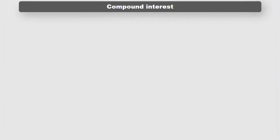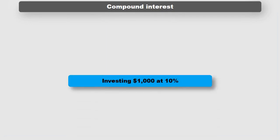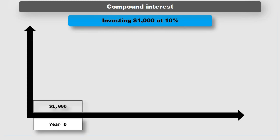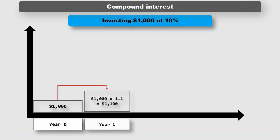Let's consider the mechanics of compound interest. This can be considered as interest accumulating on a deposit in the bank. Suppose we put a thousand dollars on deposit today into an account that will earn us ten percent a year. In one year's time, this will be worth a thousand dollars times 1.1 — the 0.1 is for the interest — equals one thousand one hundred dollars.